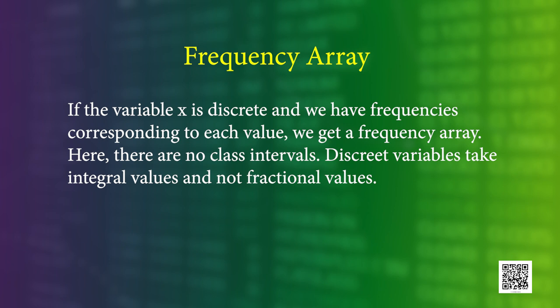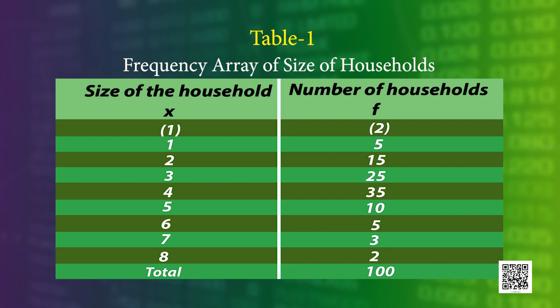Now, we will illustrate the construction of a frequency array and frequency distribution. We obtain a frequency array if the variable x is discrete and we have frequencies corresponding to each value. Here there are no class intervals. A survey of 100 households was carried out to obtain information on their size, i.e., the number of members of households. The results are classified as a frequency array in Table 1 shown on the screen.